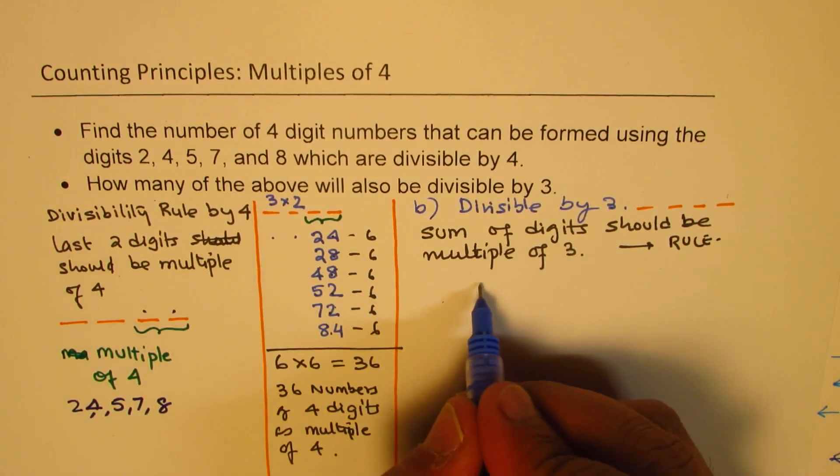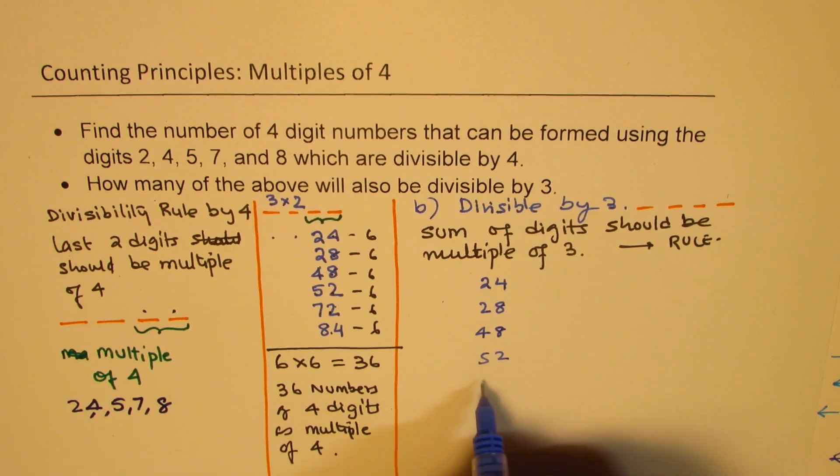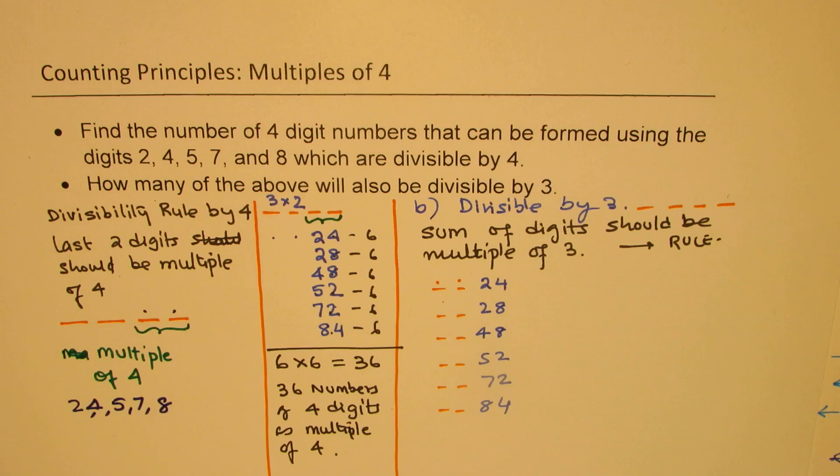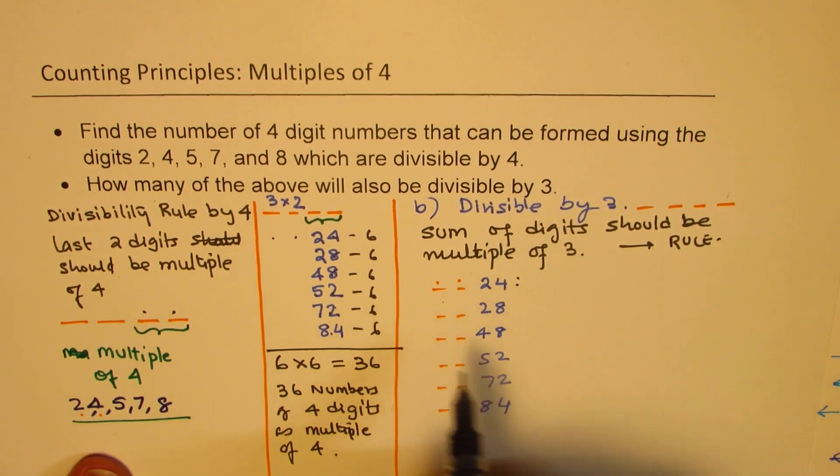So let's again consider these numbers. So we are ending with 24, 28, 48, 52, 72, and 84. Now, we have two more positions to fill. What could be these numbers which could give us addition which is a multiple of 3? Now, 2 plus 4 is 6. So we already have a multiple 6. So these two, we are looking for multiple of 3. And we have a choice between these numbers. So if I have engaged 2 and 4, we are left with 5, 7, and 8. So what numbers could be formed?